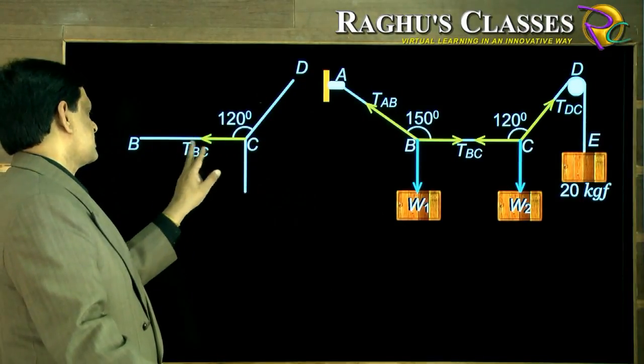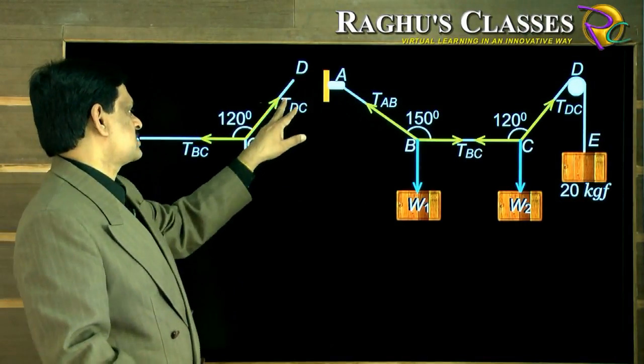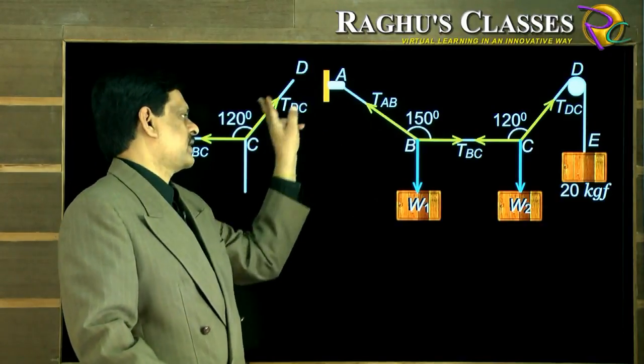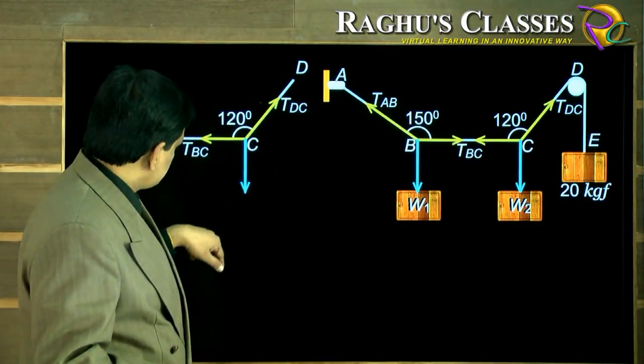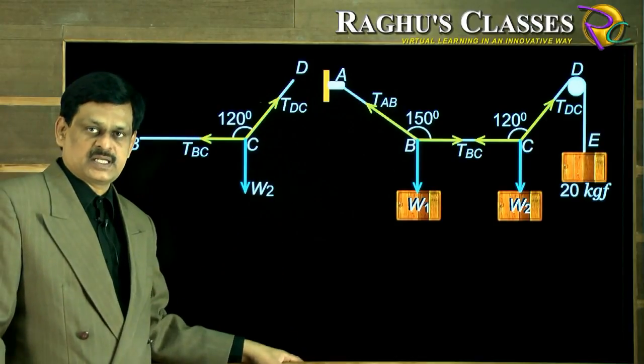Here, this is tension BC pulling it to the left, and this is the weight W2. These three forces are keeping this point in equilibrium.